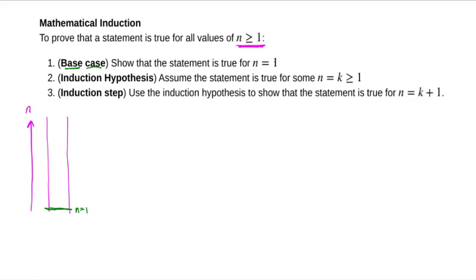The next step is called the induction hypothesis. Once you're on the ladder, you assume that you're on it, but you don't necessarily stay on the first step. Maybe you've climbed up to the kth step. It doesn't matter what k is — k could even be 1. Your hypothesis is that you're on the ladder, and it's not a crazy hypothesis because you've just proved with the base case that you're already there.